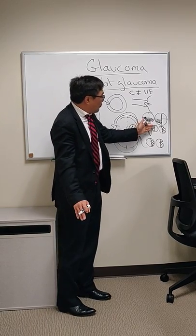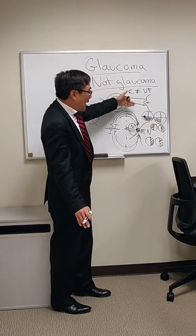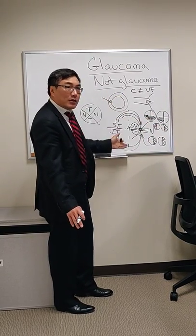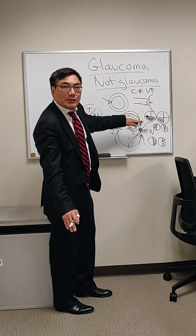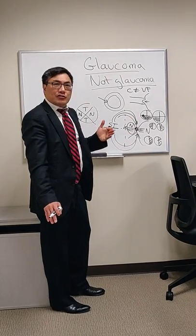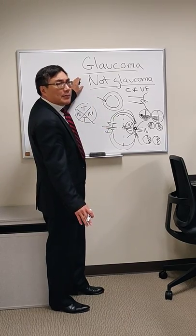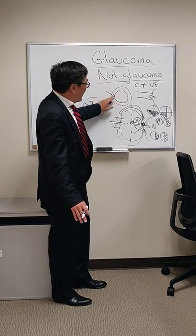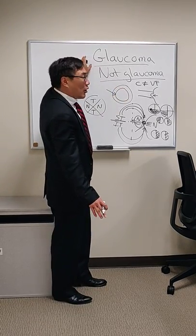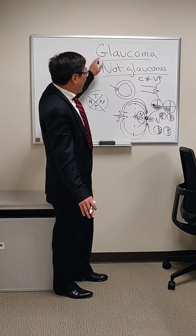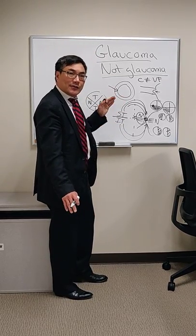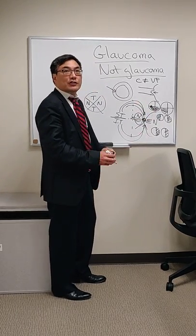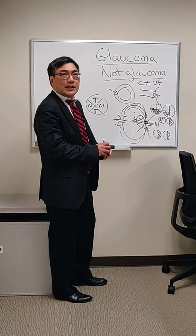If the field defect is temporal rather than nasal — because it is normally the temporal fiber that is damaged, producing a nasal field defect — or if the field defect respects the vertical meridian rather than the horizontal meridian, these are all features that should prompt imaging. Cupping is the ophthalmoscopic feature of glaucoma, but other conditions can cup the nerve. If you have loss of acuity, too rapid a course, rim pallor, a vertical meridian defect, or a temporal visual field defect, you should seriously consider imaging that patient.